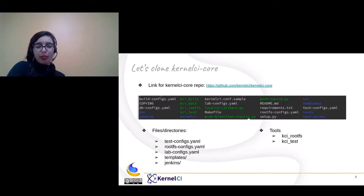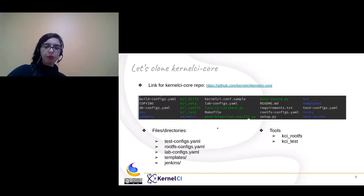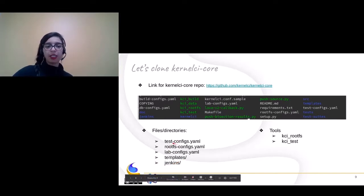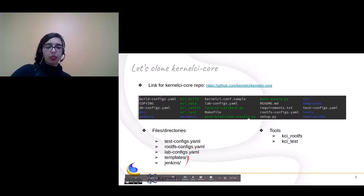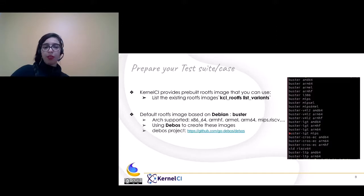Before getting started, you first need to clone the Kernel CI core repo — this is the link for it. When you clone this repo, these are the files you are going to have. In this talk, we'll be modifying these files and directories: the test.config.yaml file, rootfs.config.yaml file, labs.config.yaml file, and the two directories — templates and Jenkins. There are different tools available, but in this talk we'll be using the casiya rootfs tool and the casiya test tool.